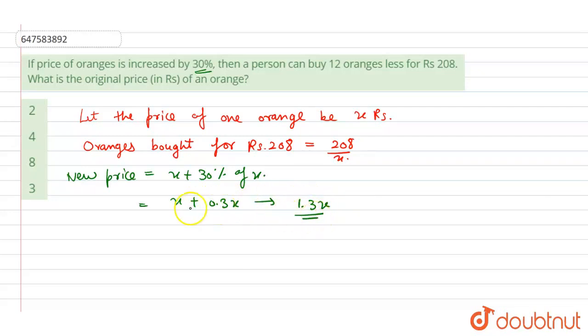0.3 plus 1 equals 1.3. Now, according to the question.